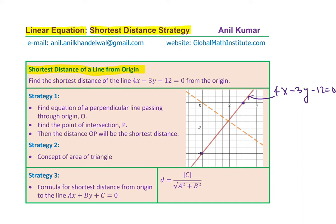Now let's talk about the strategies to find the shortest distance. The shortest distance really means from the origin — it is this particular orange dotted line which is perpendicular to the given line. So that distance we'll call d, or the distance from O to point T. That is the distance which you need to find.